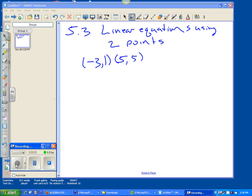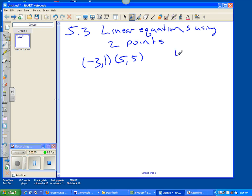This section is 5.3, linear equations using two points. As you can see, I've put up two points here that are going to be used to develop a linear equation. Remember, the linear equation we always have to set up is y equals mx plus b, where m is the slope of the line and b is the y-intercept, where it crosses y.